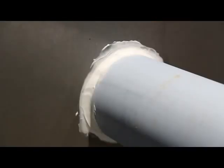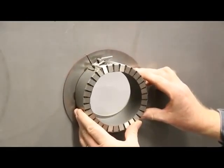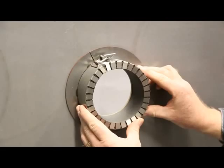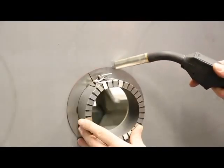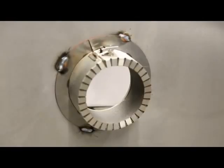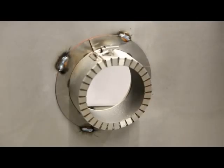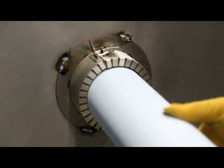If you need to install the pipe after the fire penetration seal has been welded to the structure, simply align the closed and locked seal over the opening and tack weld it to the structure. Then route the pipe through the fire penetration seal.